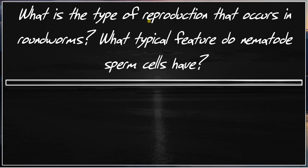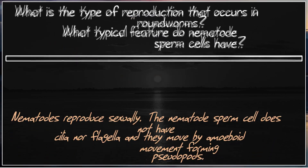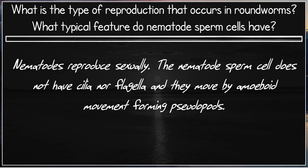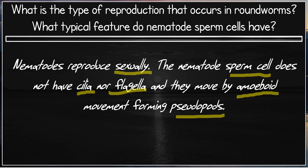What type of reproduction occurs in roundworms? What typical feature do nematode sperm cells have? Nematodes reproduce sexually. Nematode sperm cells do not have cilia nor flagella. They move by amoeboid movement, forming pseudopods.